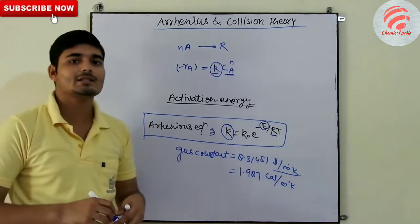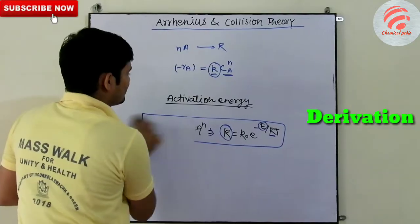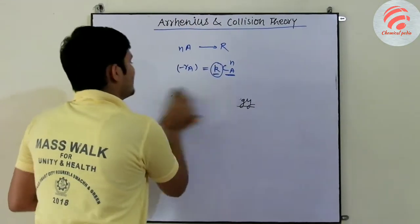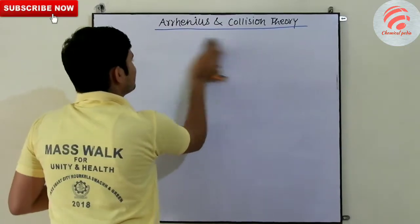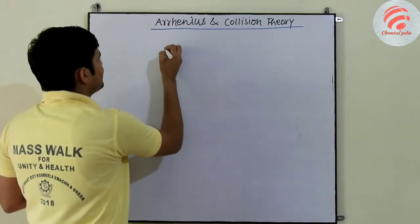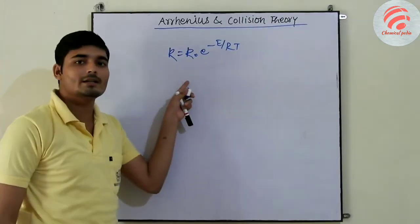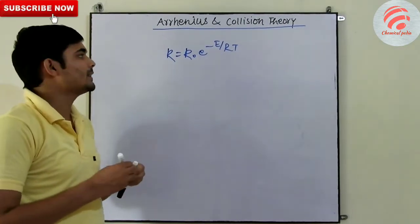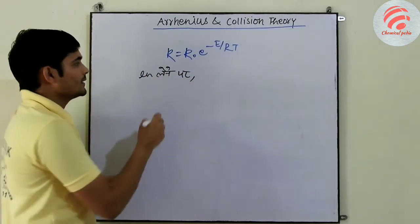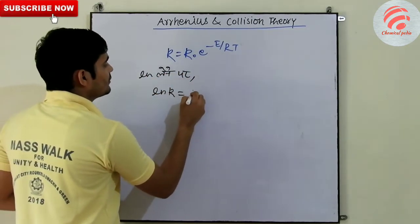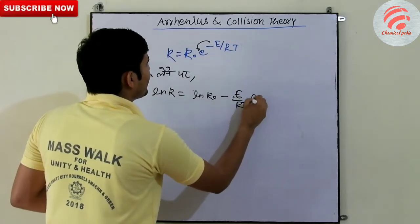Now we can see the derivation. The derivation is: ln on both sides will be ln layer, so what will happen? ln k is equal to ln k naught, this will be minus E upon RT and ln e.